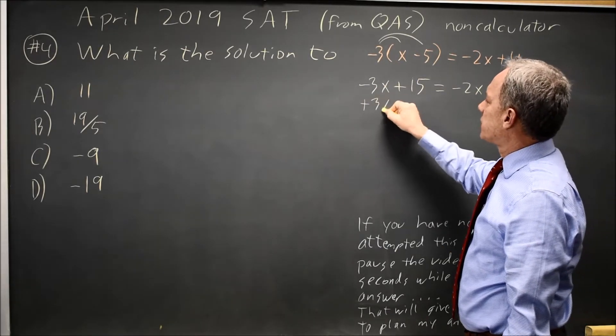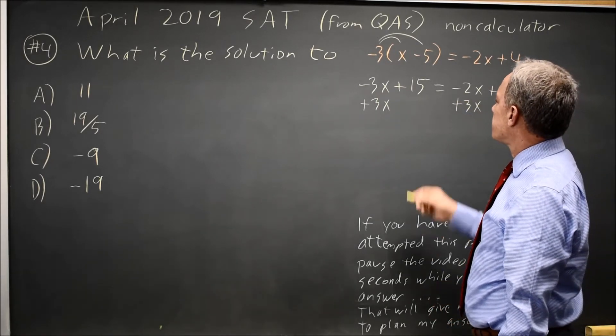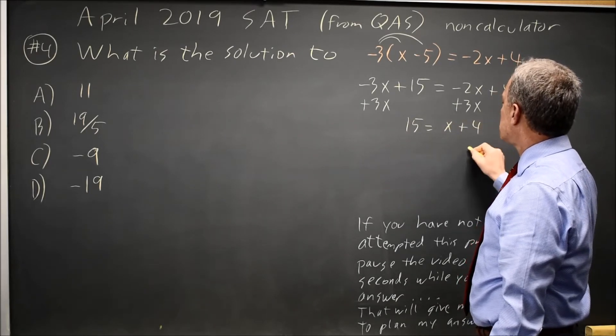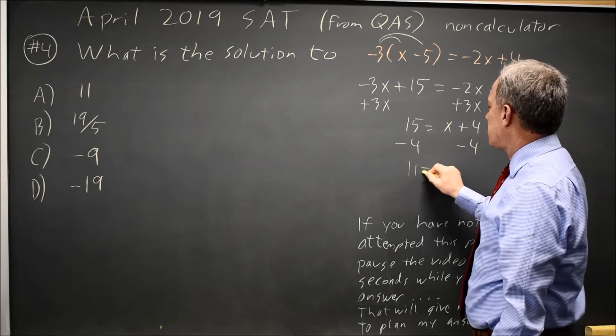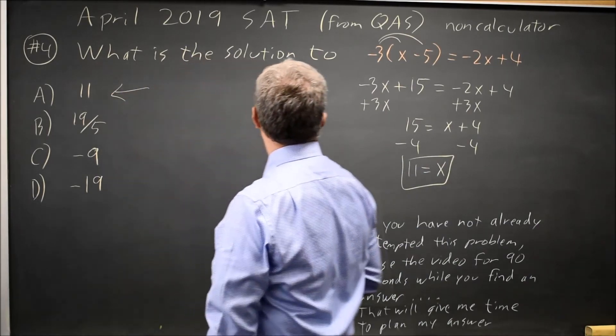Let's add 3x to both sides. Remember that you always do the same thing to both sides of an equation. So that's 15 equals x plus 4. And now subtract 4 from both sides. 15 minus 4 is 11. All I have left on the right is x. So the correct answer would be choice A, 11.